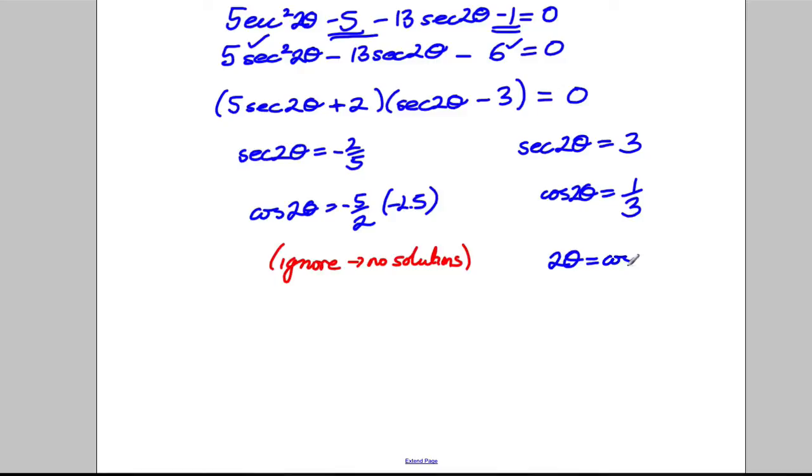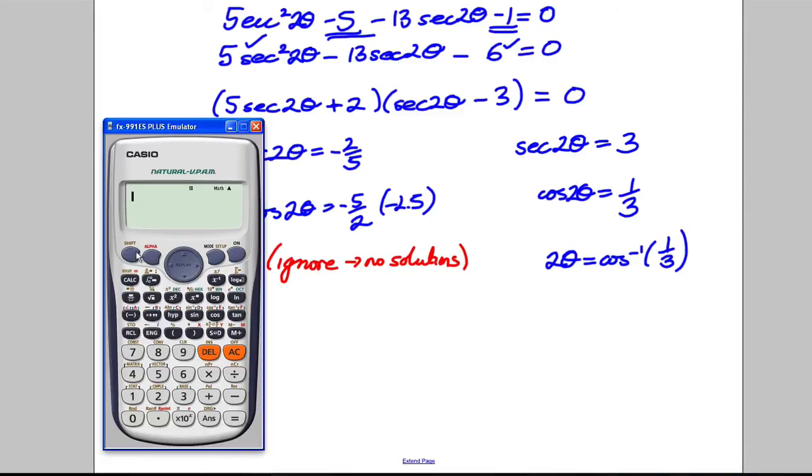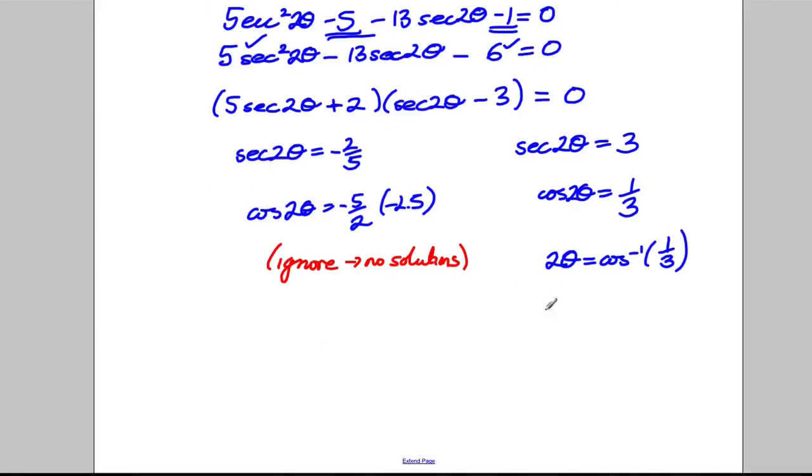So, 2 theta is going to be the inverse cos of 1 third, so calculate it out, make sure it's in degrees mode, and inverse cos of 1 third, and I get my principal value to be 70.5 degrees. So, 2 theta is going to equal 70.5 degrees.